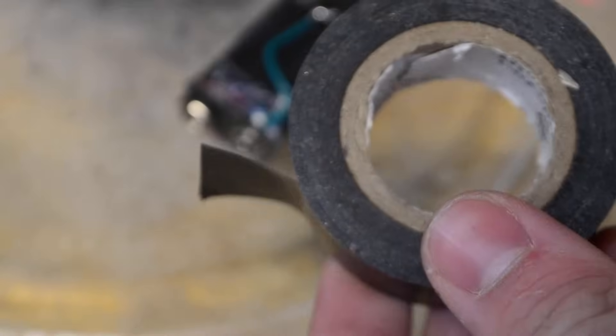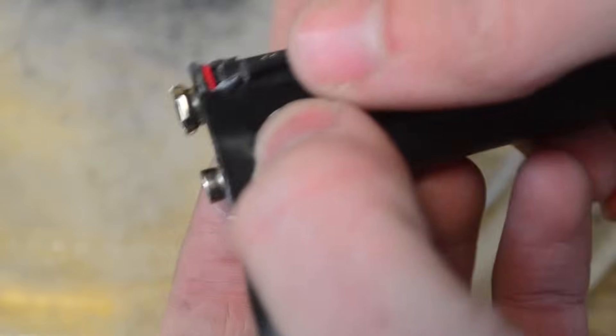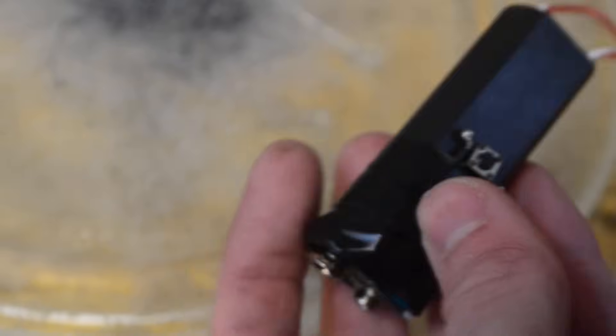To cover up some of those bare wires, I'm going to be using electrical tape. I'll start here at the bottom and do a couple wraps going up. Now it looks a little bit nicer with those bare wires covered up.